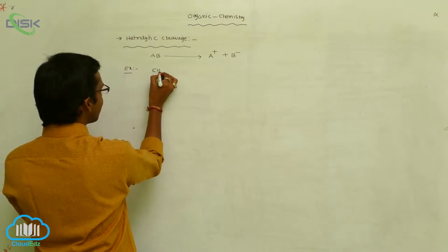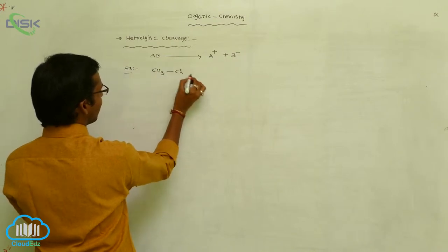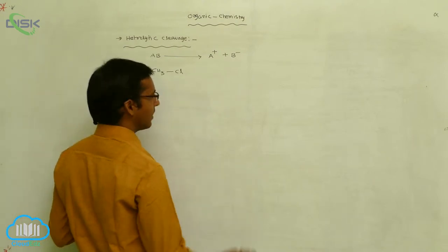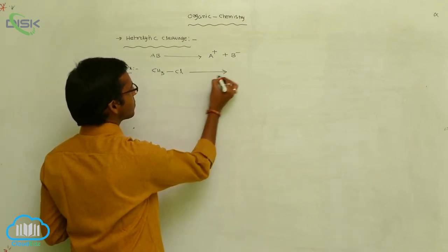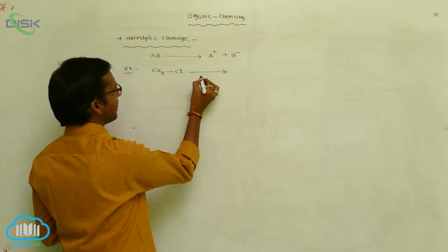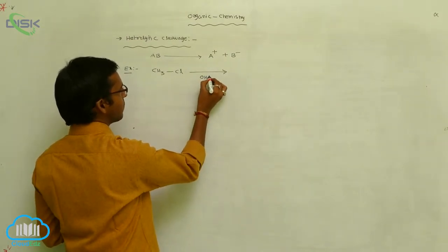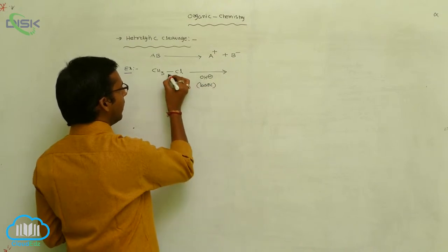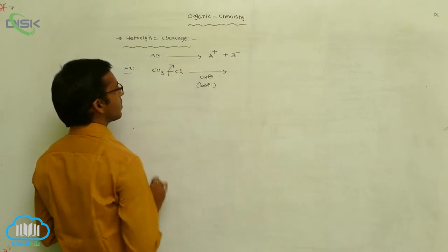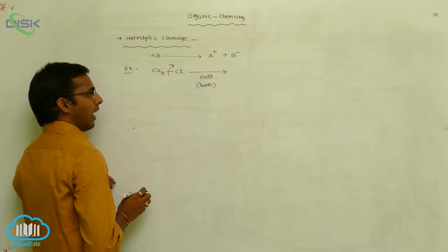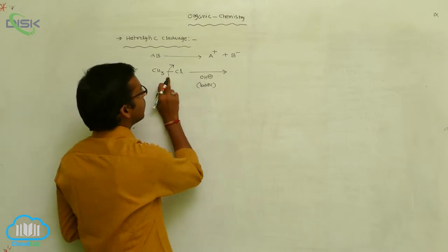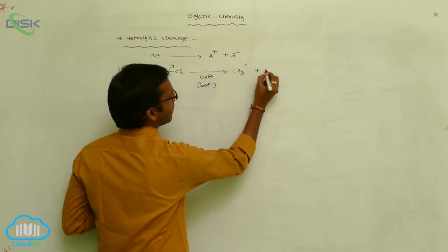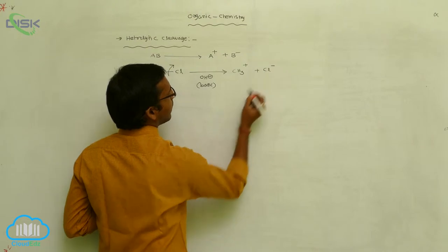For example, if you consider CH3Cl, an alkyl chloride, in the absence of photochemical conditions, this undergoes heterolytic cleavage in the presence of a basic medium. It gives two types of ions: this heterolytic cleavage gives a methyl cation and a chloride ion.